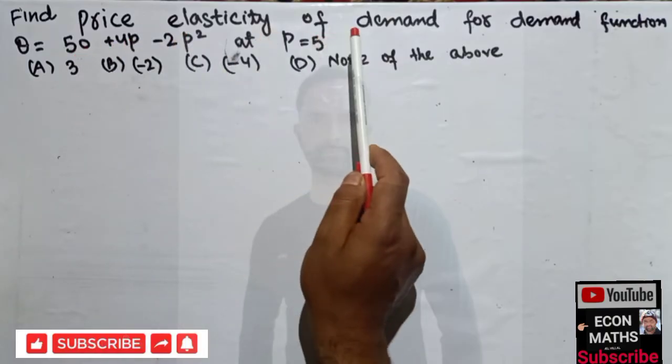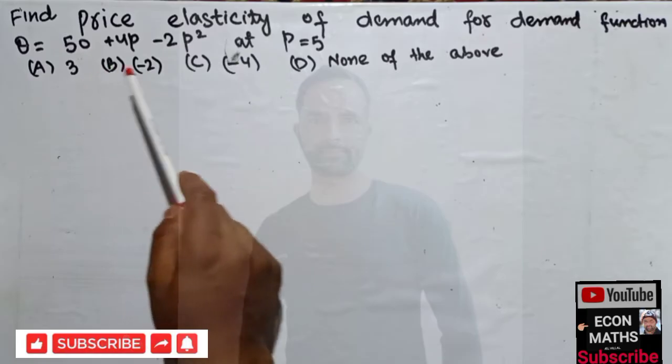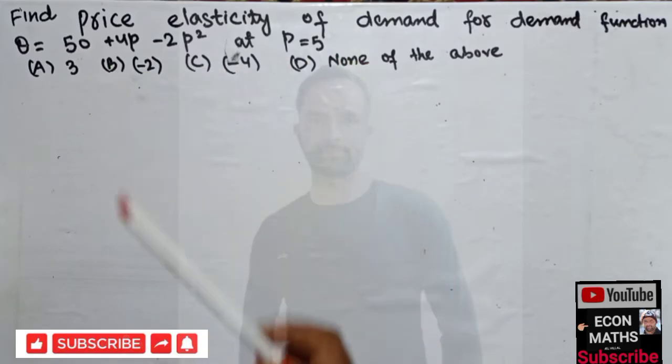at p = 5. The options are given as 3, -2, -4, and none of the above.